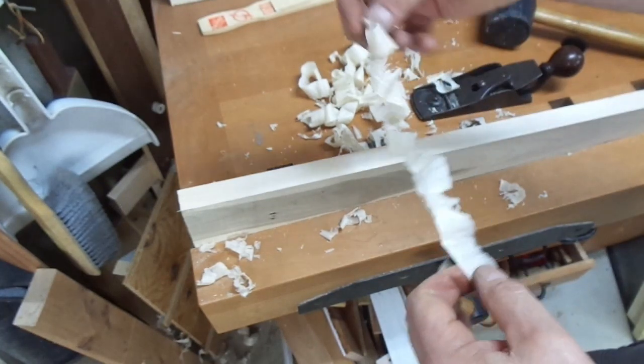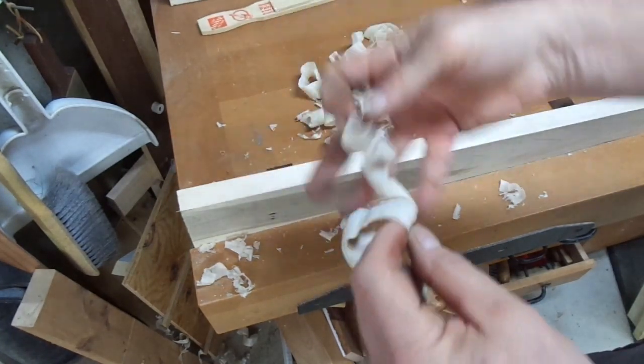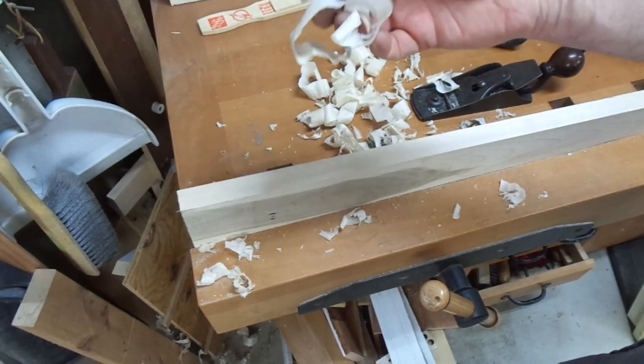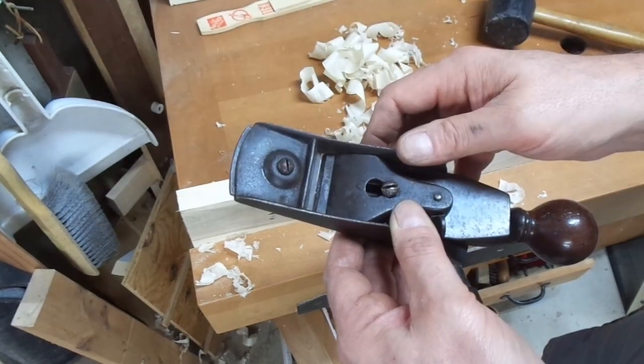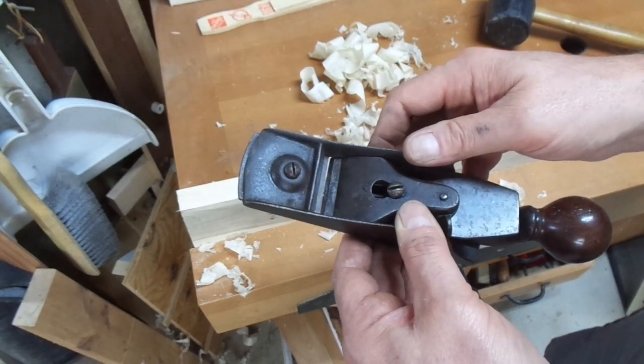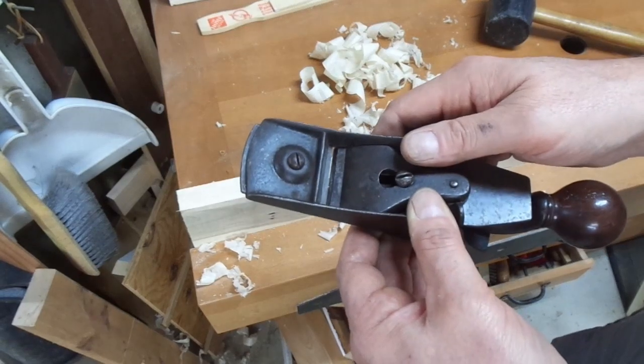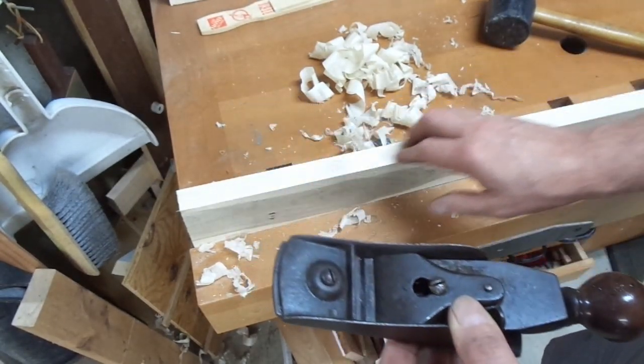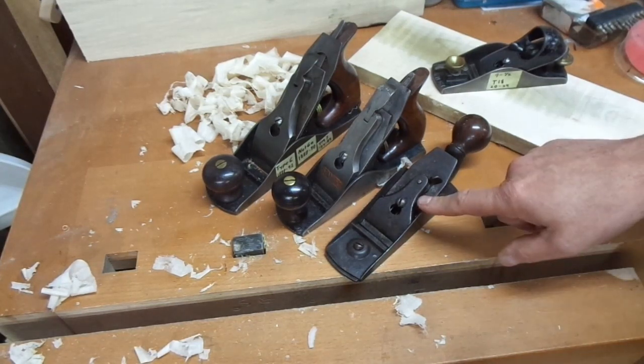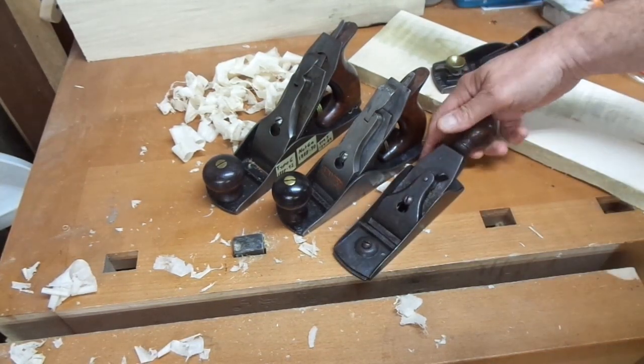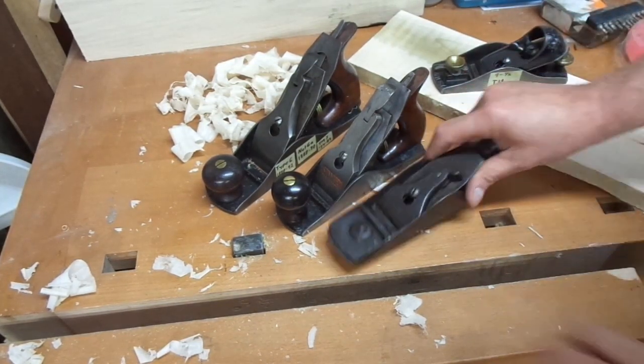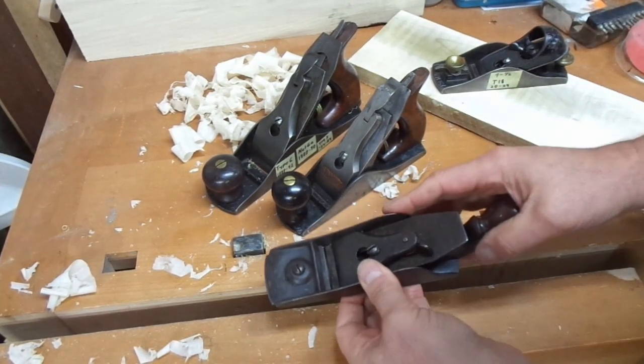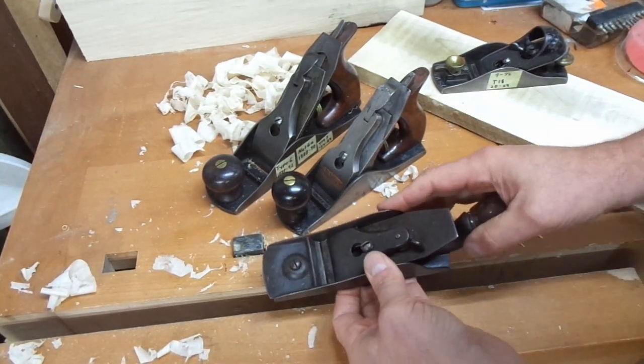So, not too shabby for a 150-year-old plane, huh? I think it would behave a little better if the bevel angle of the iron was something closer to 22-25 degrees, I think it would cut a little easier. You know, this is the only block plane I have that has this tail knob on it.